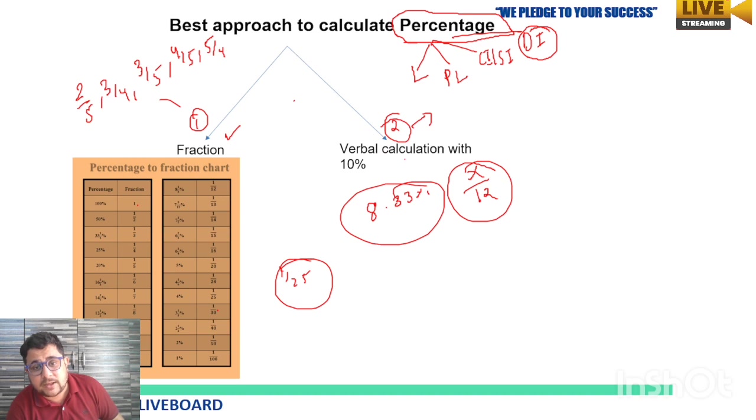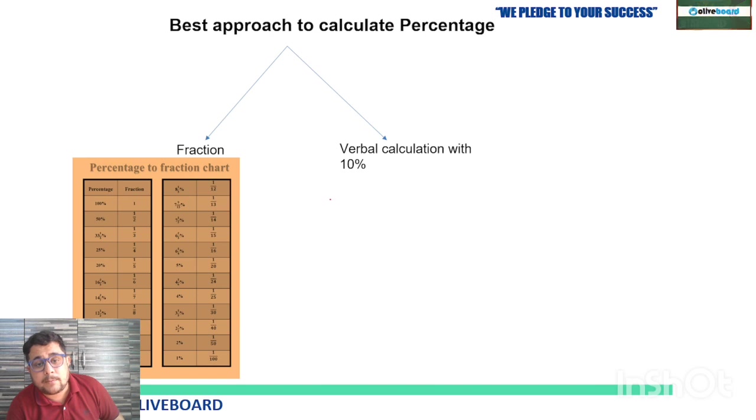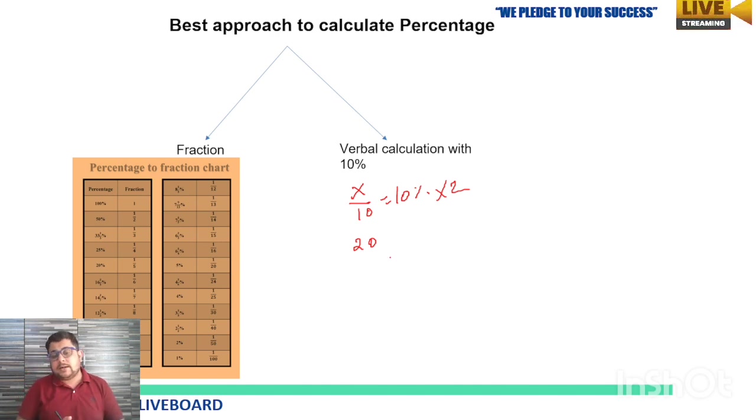The second thing: the most important verbal calculation. How can you calculate percentage verbally when they are asking something? By the help of 10% only. 10% is just 1/10—you just need to divide the number by 10. If you want 10% of x, it's x by 10. For 20%, multiply that by 2; 30%, multiply by 3; 40%, multiply by 4. Multiples of 10 you can easily calculate in terms of percentage.